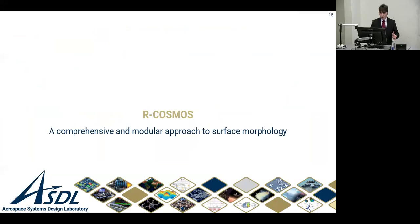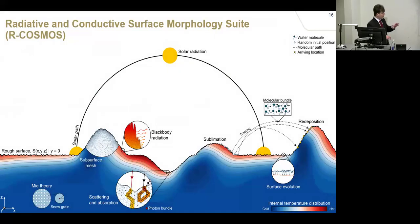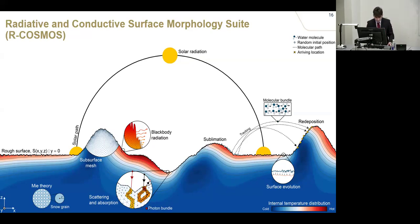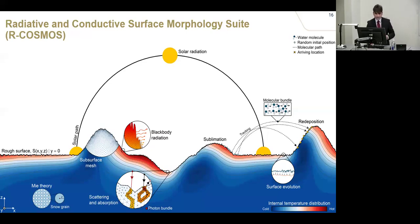I'd like now to introduce the code called R-Cosmos — it integrates every single physical process I've presented and has some additional physics. It comprises solar radiation, blackbody radiation, heat conduction, surface evolution, and sublimation, all integrated into one single code. I iterate between the different modules within the R-Cosmos suite to simulate surface evolution over millions and millions of years. There are many levels of physics like Mie theory, material properties varying with temperature, and many small details to make this code as realistic as possible.